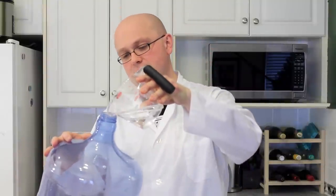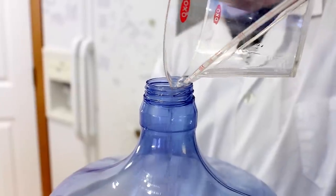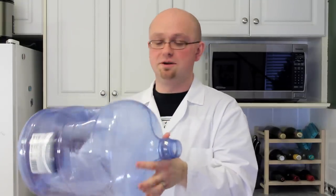We then pour that in the 5-gallon jug and give it a few good turns to coat the inside with the rubbing alcohol.